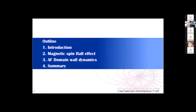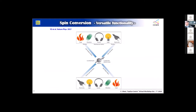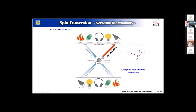We have been working on spin conversion, which is a versatile functionality in which all physical entities — heat, vibration, sound, light, and electricity — can be interconverted by spins. We know that the spin Hall effect, which converts charge to spin, is the most important behavior with which we can generate the spin current. This is known as spin-orbit torque.